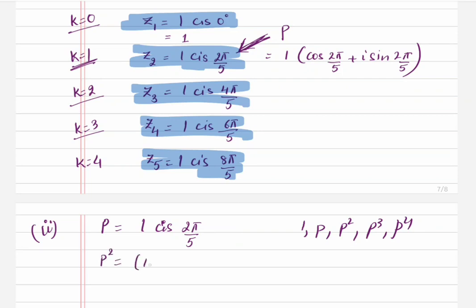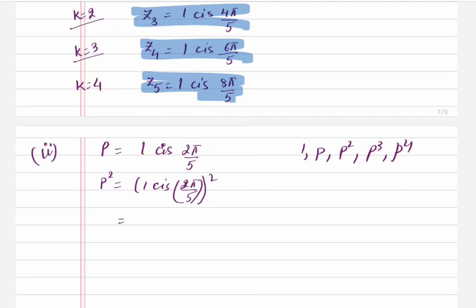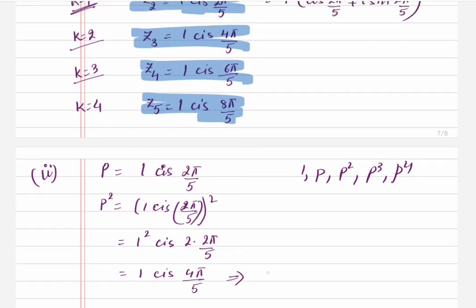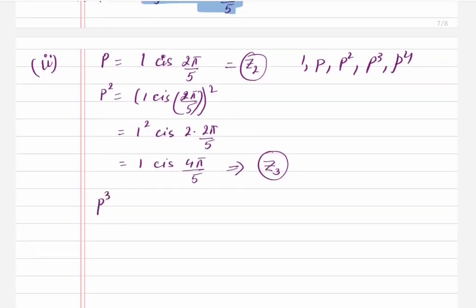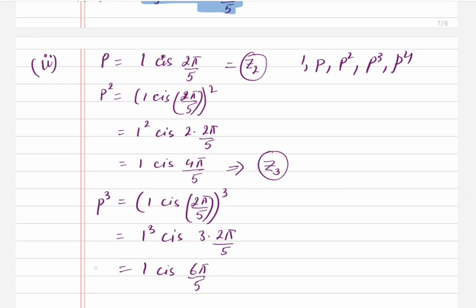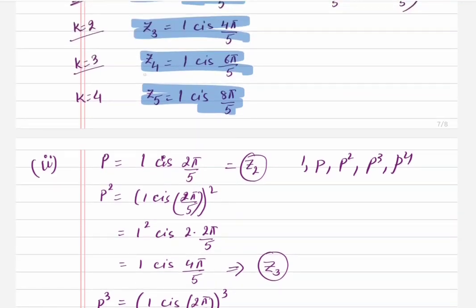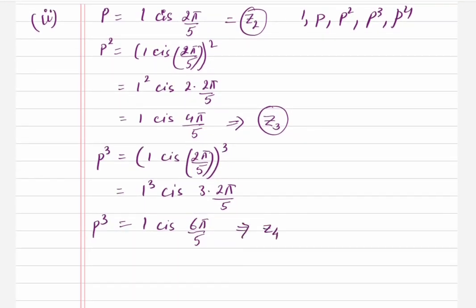Let's find p². That is (1 cis(2π/5))², and using De Moivre's theorem we get 1² cis(2 × 2π/5) = 1 cis(4π/5), which equals z₃. Now p³ = (1 cis(2π/5))³ = 1³ cis(3 × 2π/5) = 1 cis(6π/5), and that equals z₄.